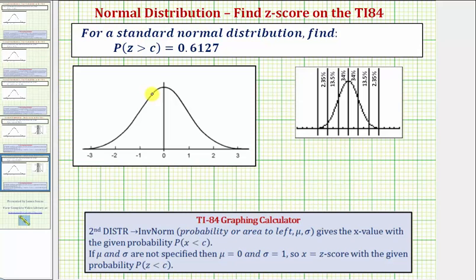It's going to be between zero and negative one. So let's say that c is somewhere in here, where the probability of z being greater than c equals 0.6127. This means 0.6127 is the area to the right, which should be the area of the shaded region here.